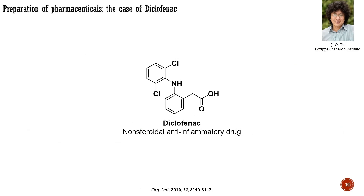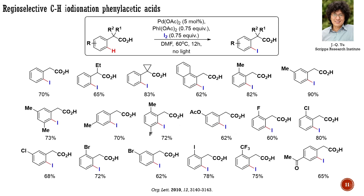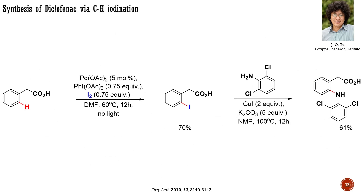Now let me describe two examples of the synthesis of commercial pharmaceuticals. The production of the anti-inflammatory drug diclofenac can involve a CH activation step. In 2010, the group led by Yu developed a palladium-catalyzed approach for carboxyl-directed CH iodination of arenes. Their methodology was quite successful for a range of substituted arenes. The reaction worked well even for electron-deficient substrates, which are normally inactive for electrophilic aromatic substitutions. They suggested and successfully performed the synthesis of diclofenac, using palladium-catalyzed CH iodination followed by copper-mediated arene amination to yield diclofenac in 61% yield.